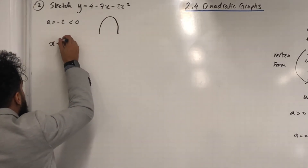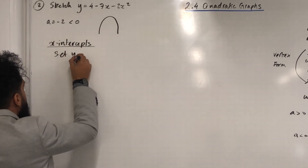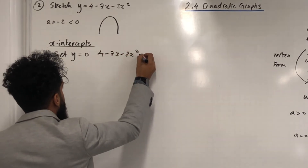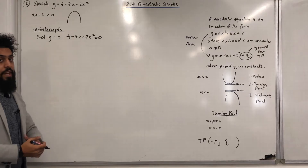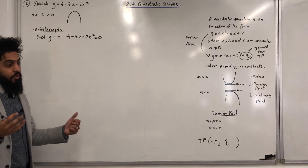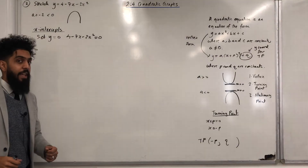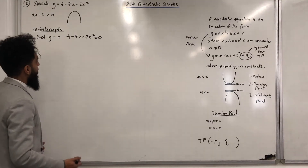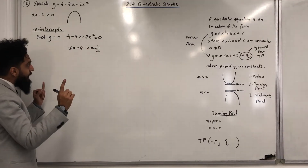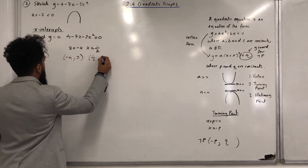To find the x-intercepts, I set y = 0, giving 4 − 7x − 2x² = 0. Using the equation function on my Classwiz calculator, I get x = −4 and x = ½. So the x-intercepts are (−4, 0) and (½, 0).